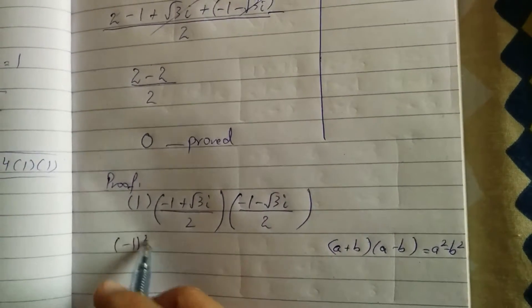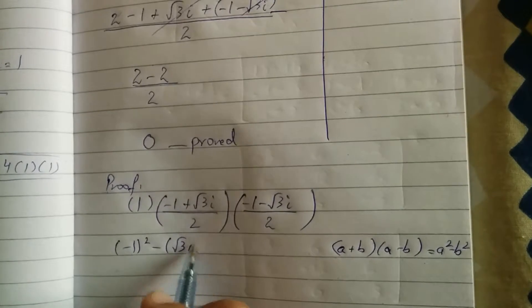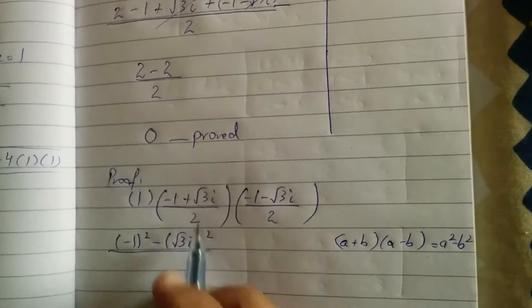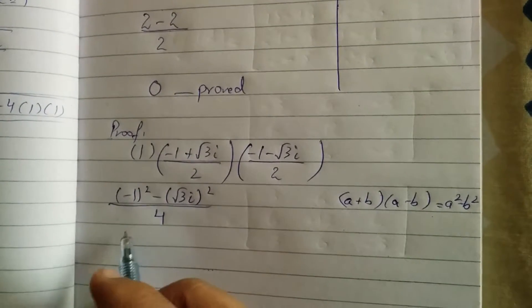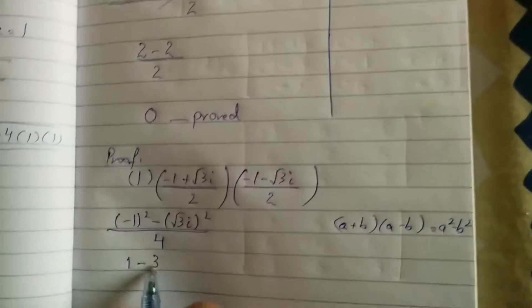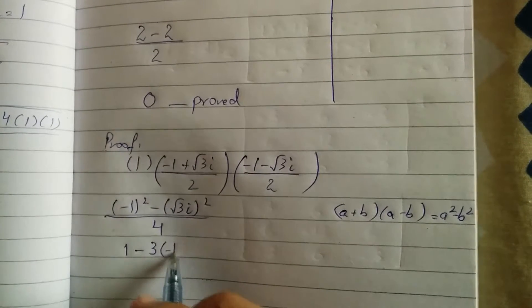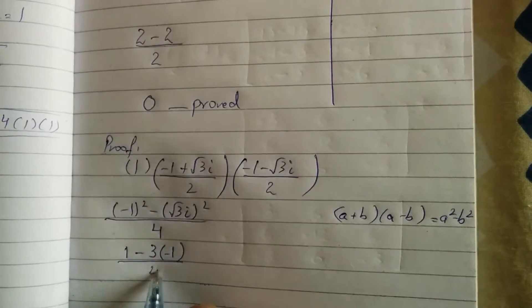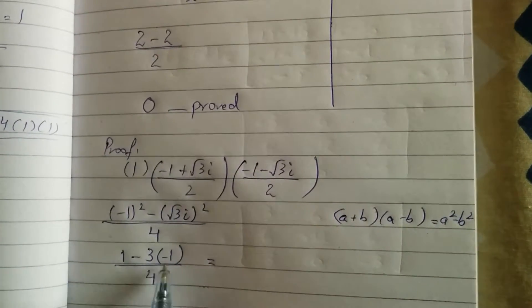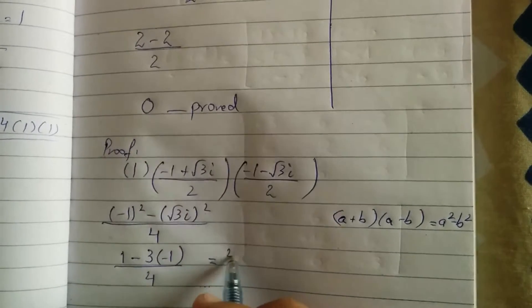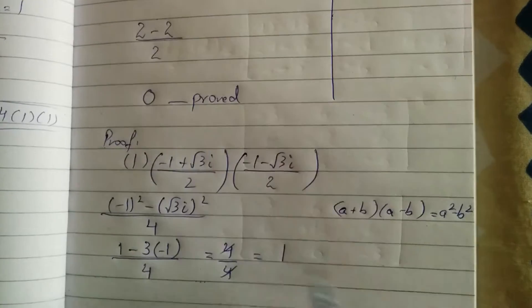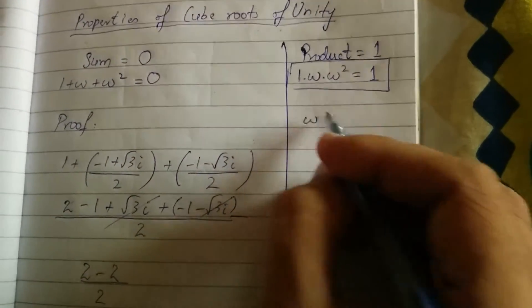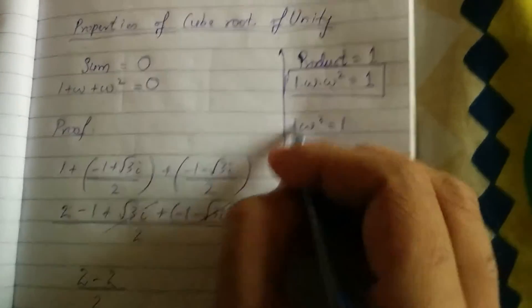So it will become minus 1 square minus under root 3 iota square, and 2 times 2 becomes 4 in the denominator. Minus 1 square is 1, root 3 square is 3, and iota square is minus 1. So minus minus becomes plus: 1 plus 3 is 4, and 4 upon 4 cancels to give 1. So here we have found that omega cube is equal to 1.